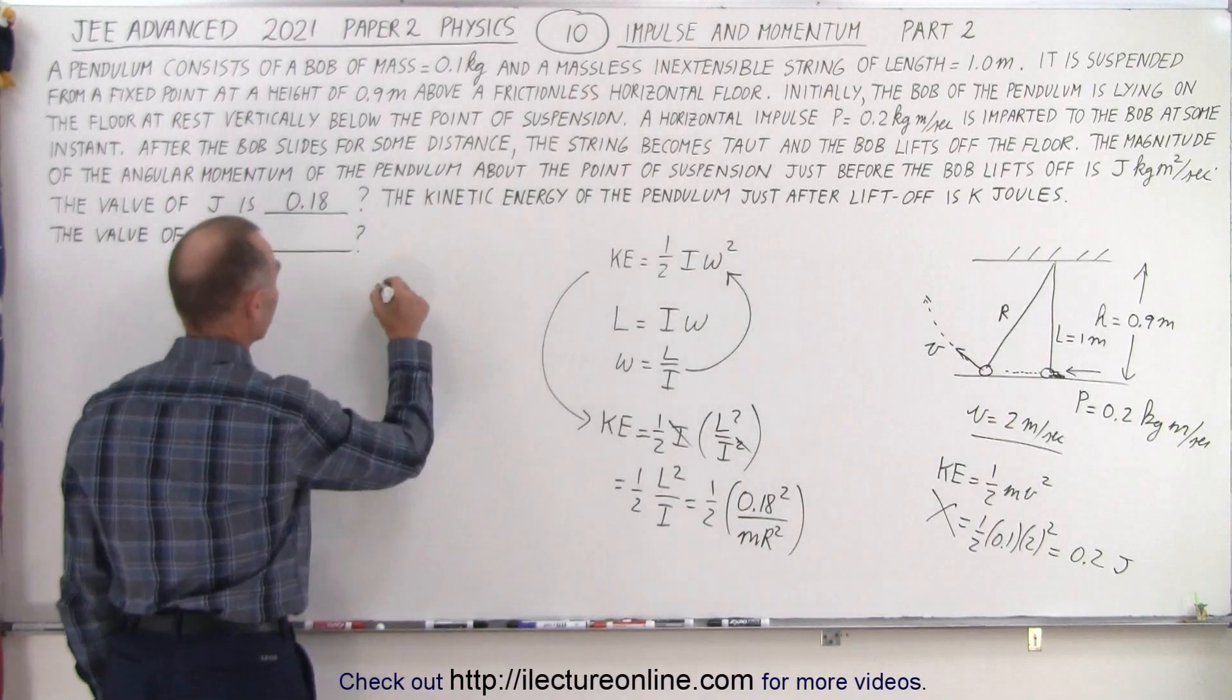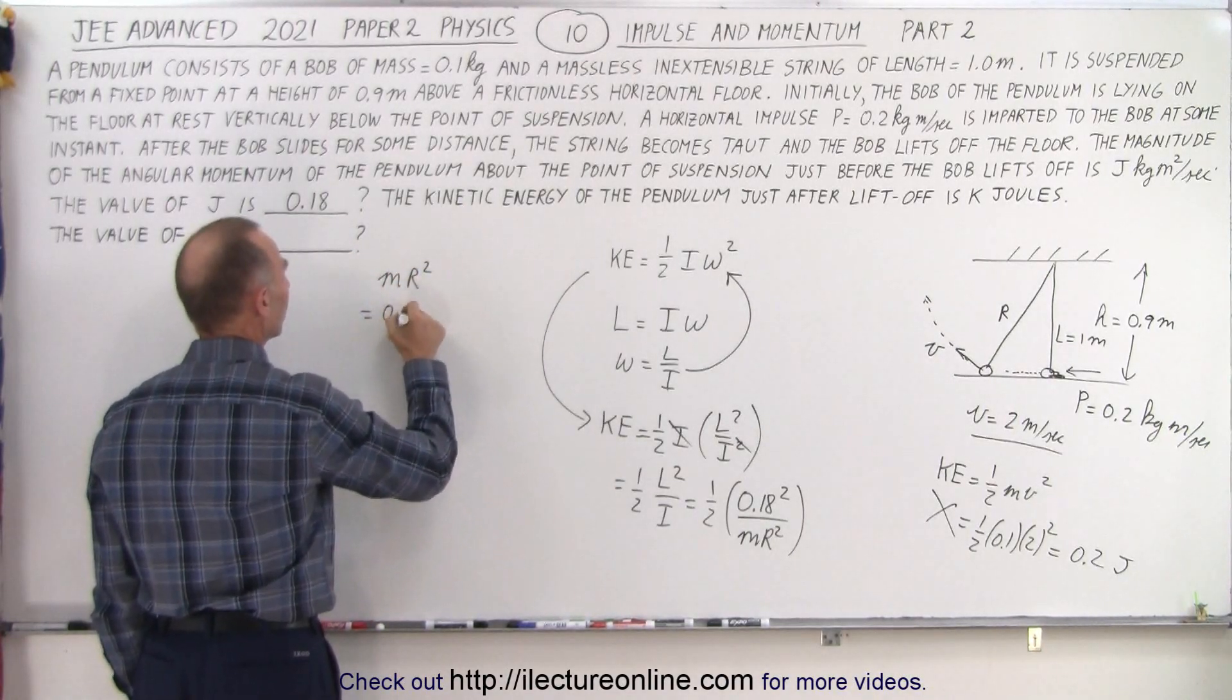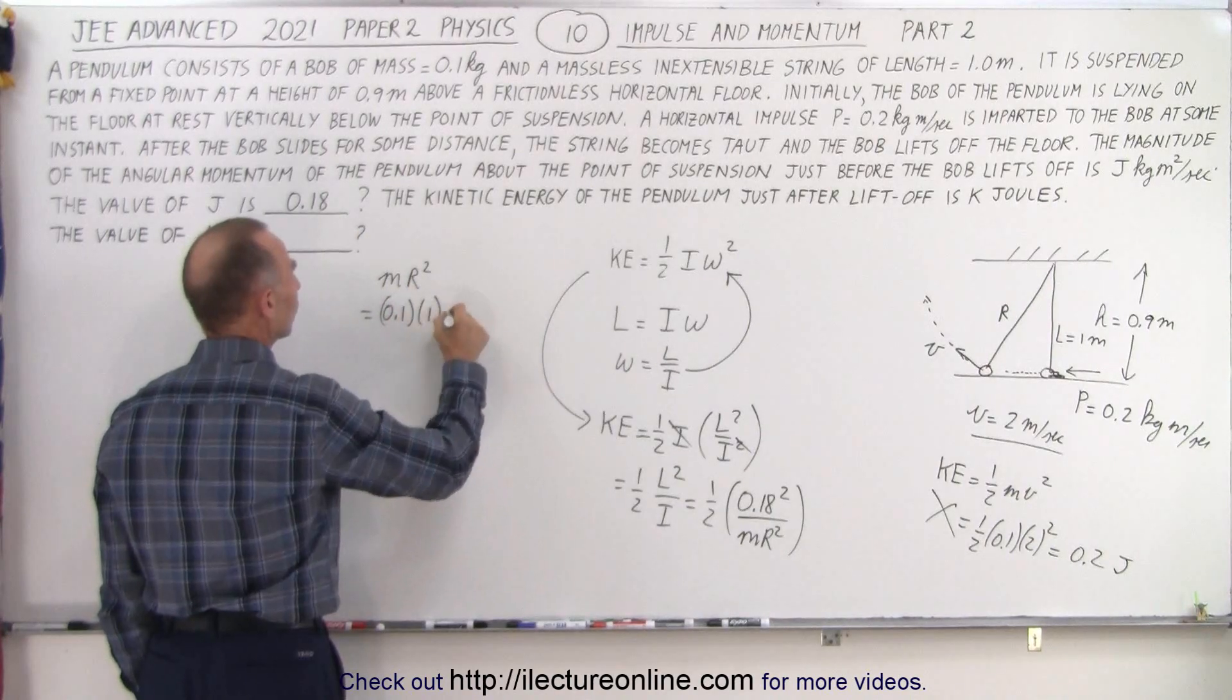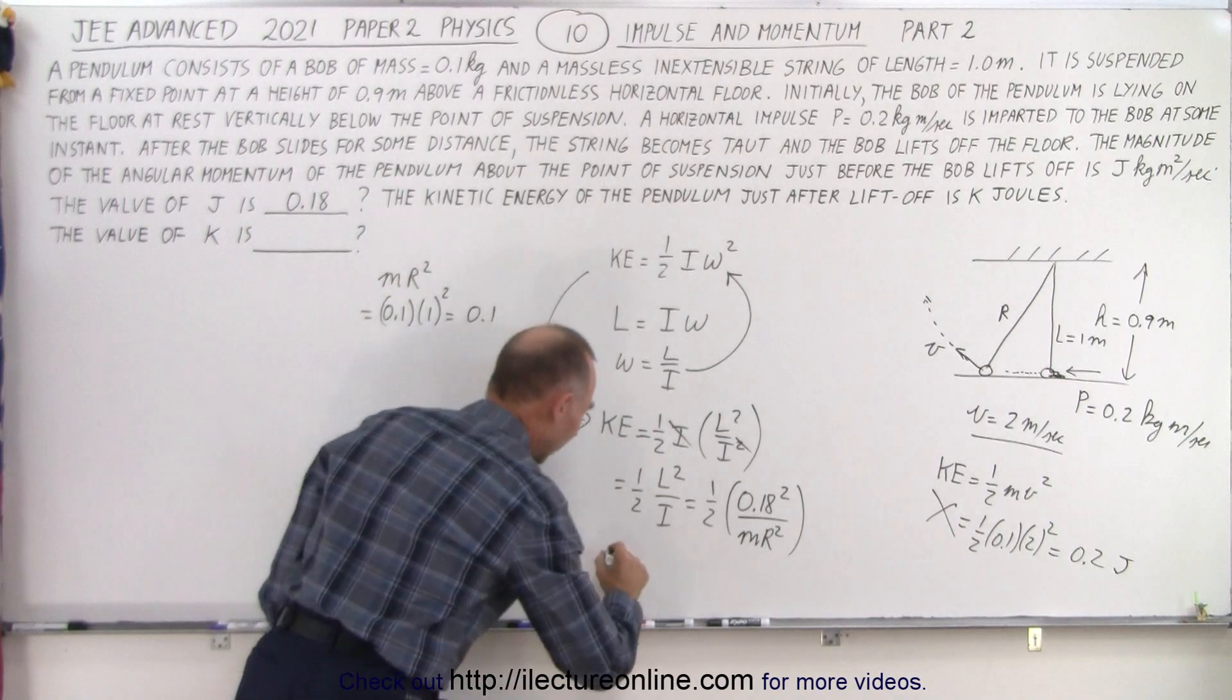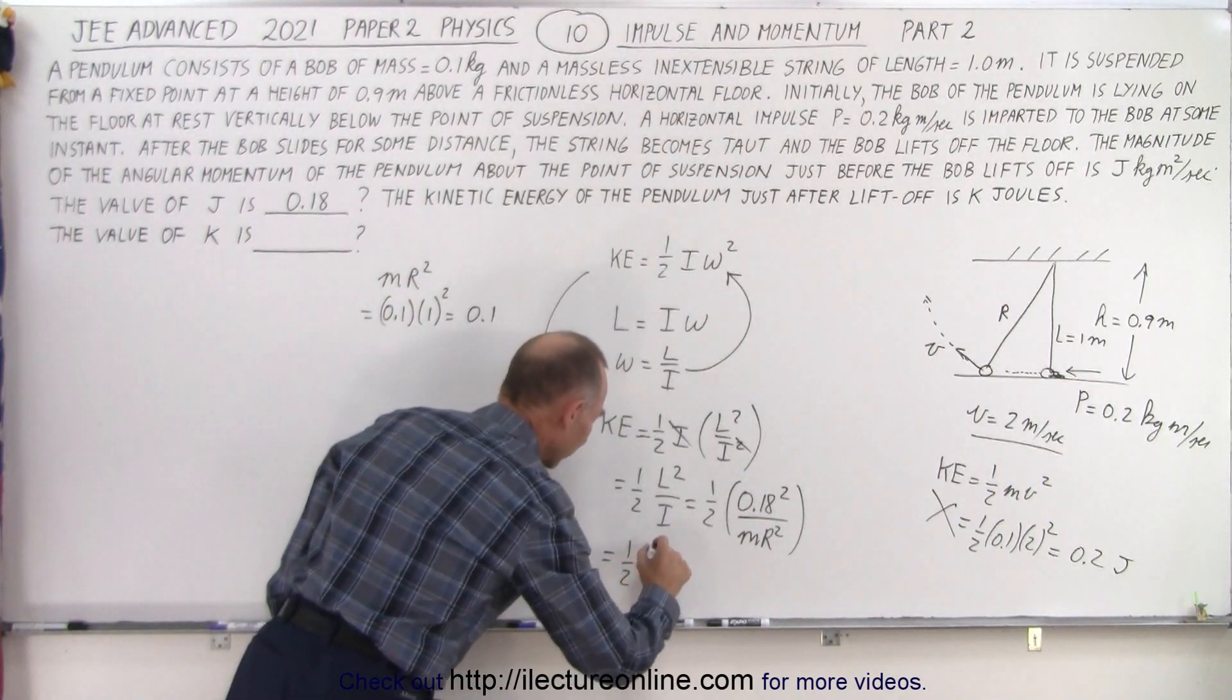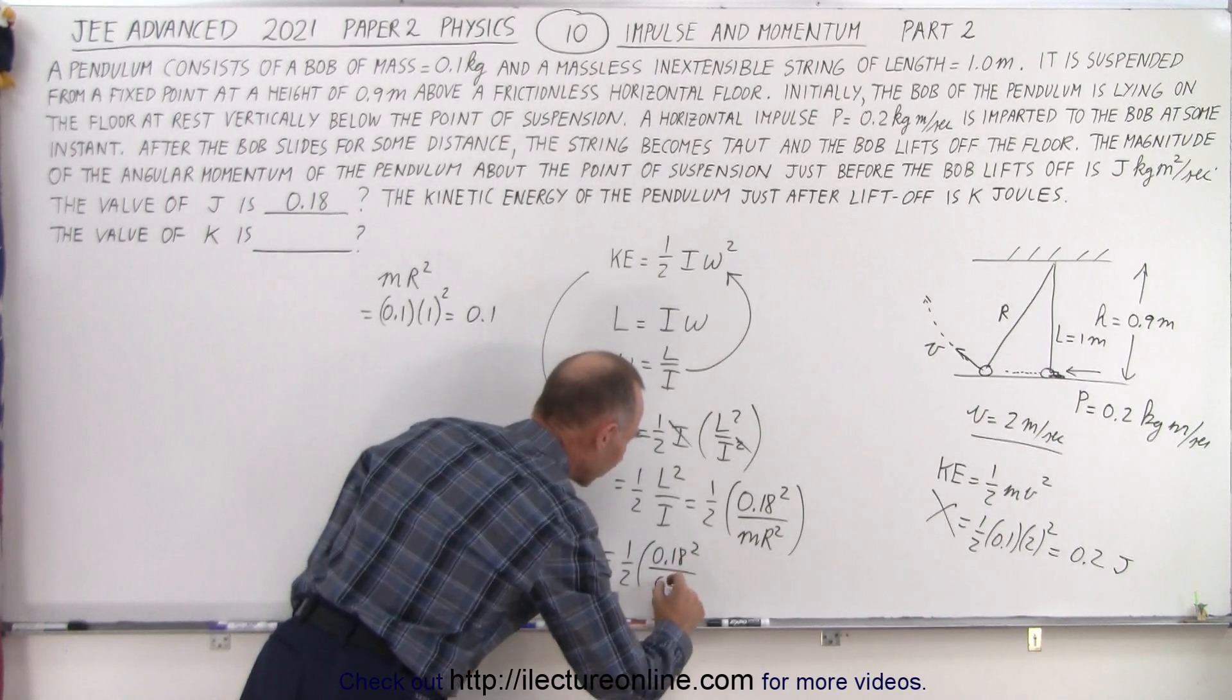What is MR squared? We have MR squared is equal to 0.1, and the radius at that point is 1, so it's 1 squared, and so this is simply equal to 0.1.